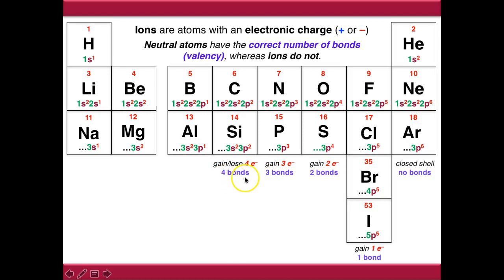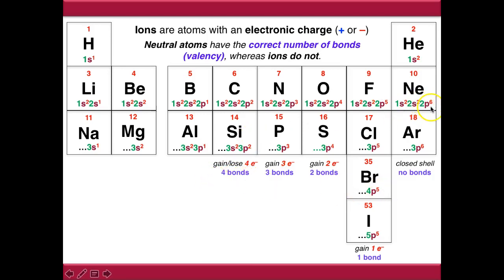Carbon is the tipping point because at this point it doesn't really matter whether it gains or loses four electrons - it can achieve a closed shell configuration both ways. It can gain four electrons and achieve a 2P6 configuration, or it can lose four electrons and go back to 1S2.